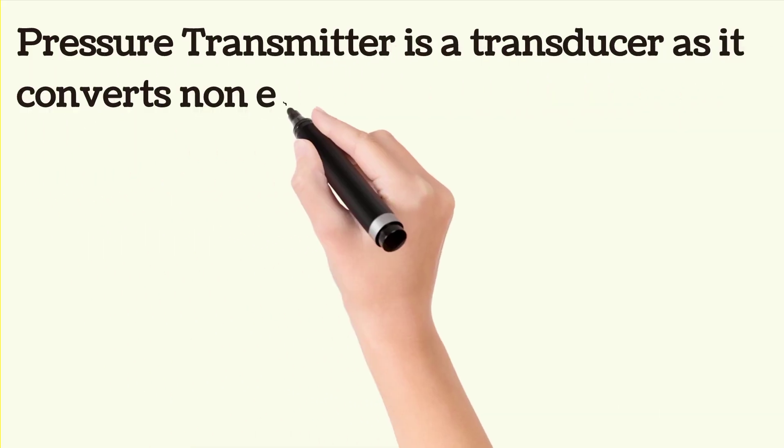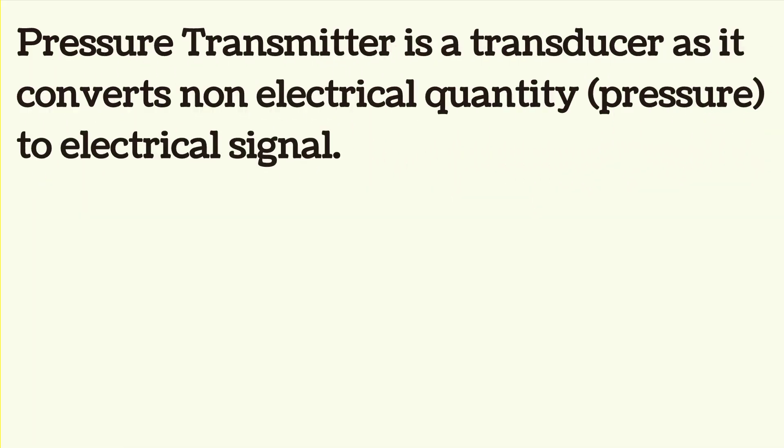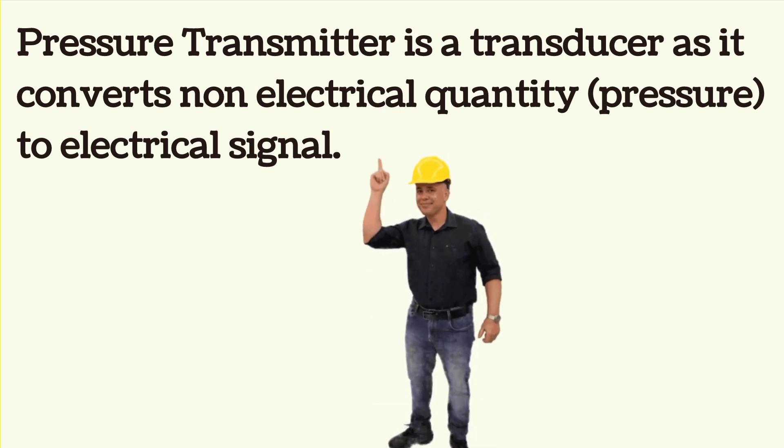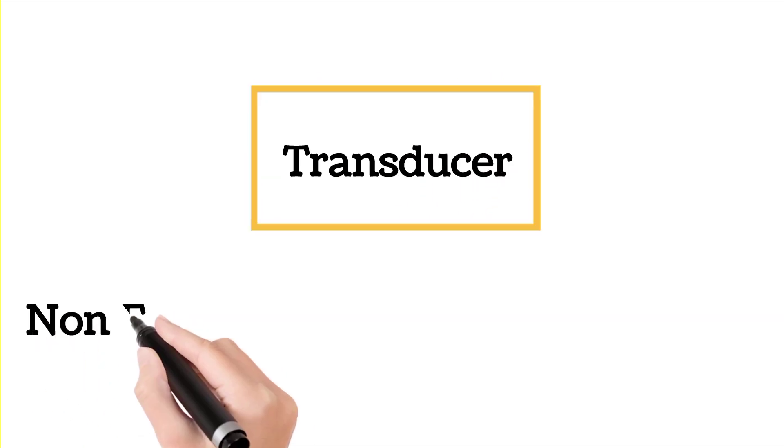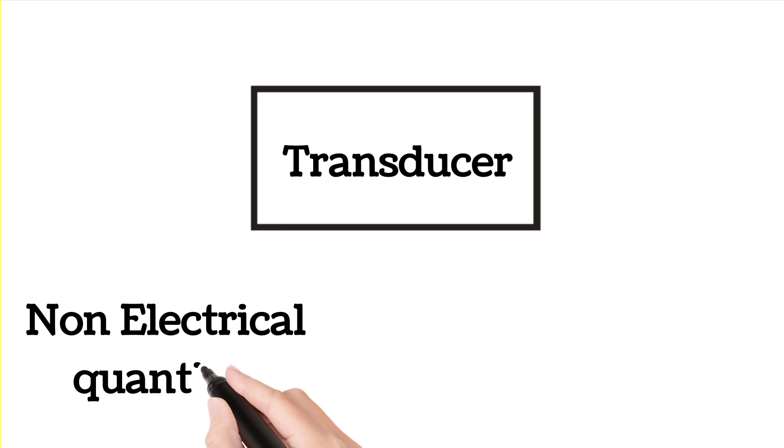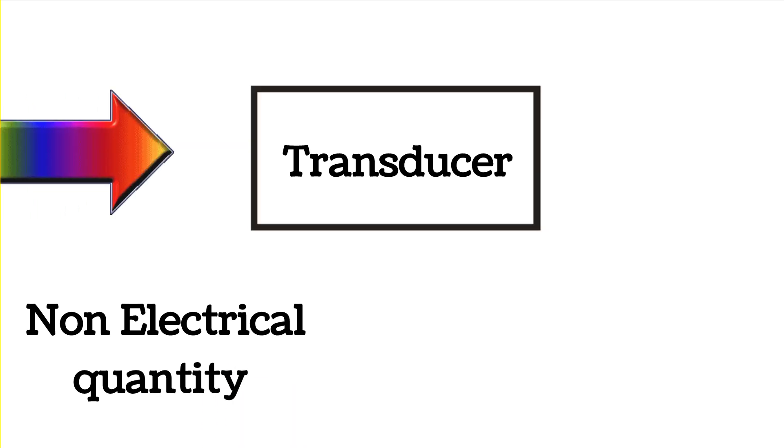Here one point is important to note that pressure transmitter is a transducer and it converts a non-electrical quantity such as pressure into an electrical signal. Definition of transducer is also clear from here. A transducer converts non-electrical quantity to electrical signal.